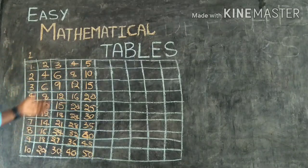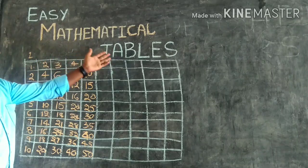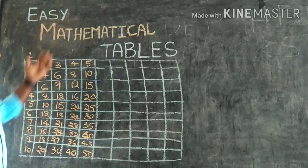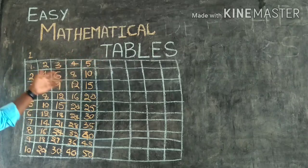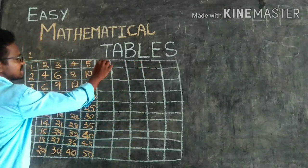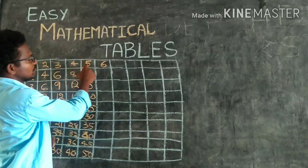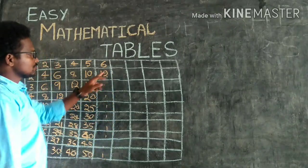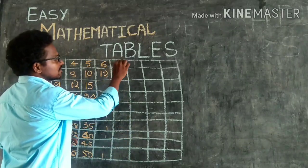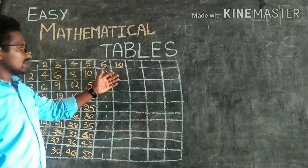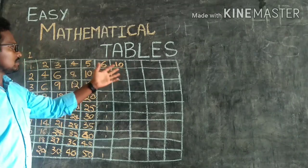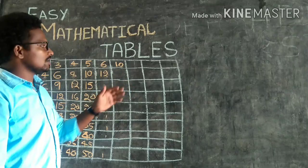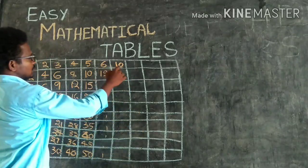You see — children can easily learn mathematical tables this way, and even older students can do it easily. This is the easy way to draw tables for any number. I am now introducing the 10th table, because some people struggle with tables from 12th, 13th, 14th, 15th, up to 20th.